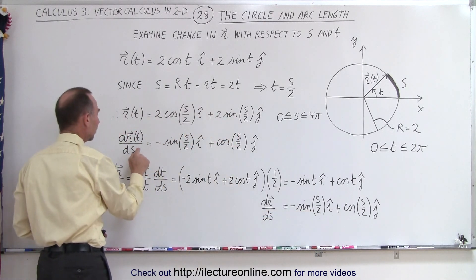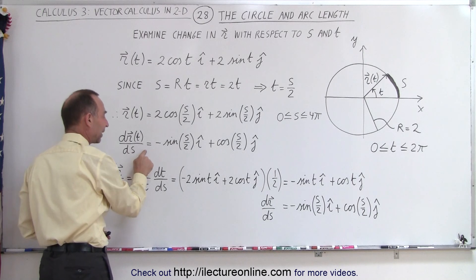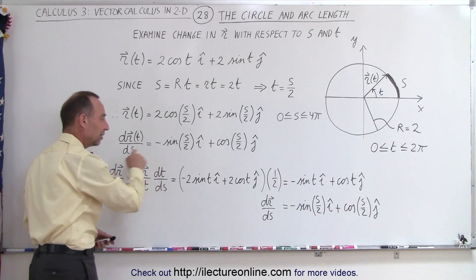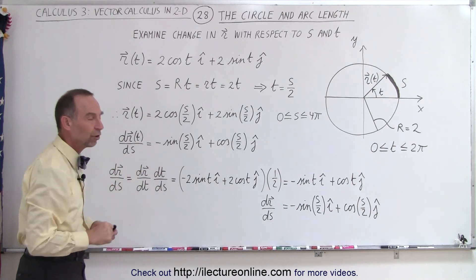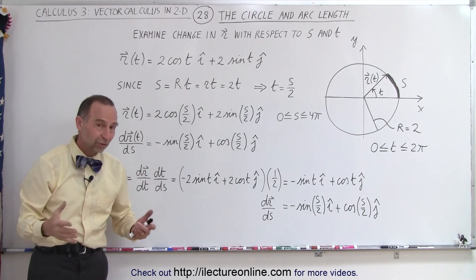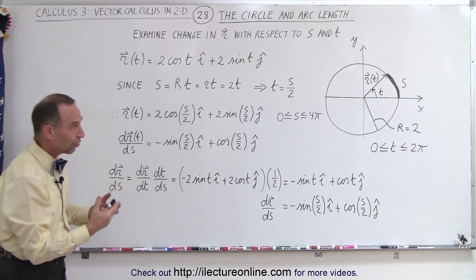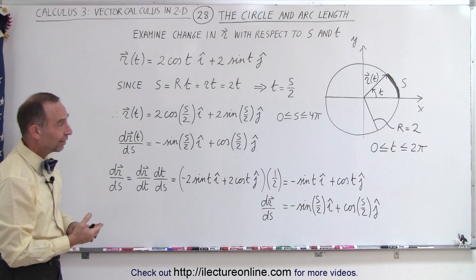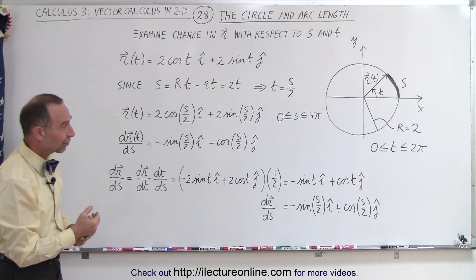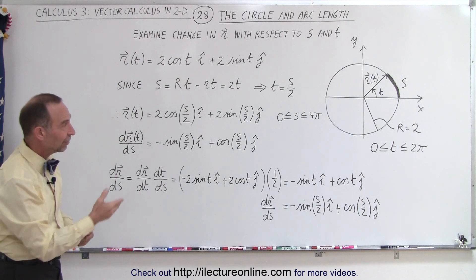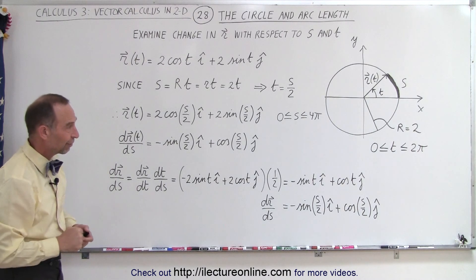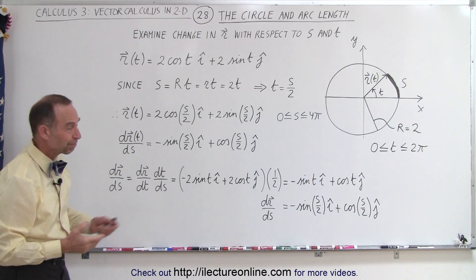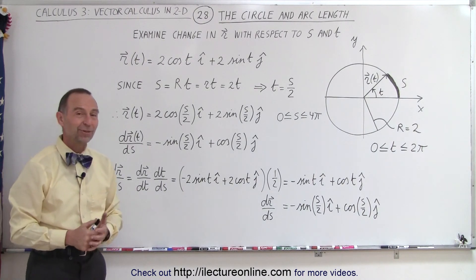This confirms the relationship between the circle, the arc length, the position vector, and the parametric variable t — and that's how it's done.